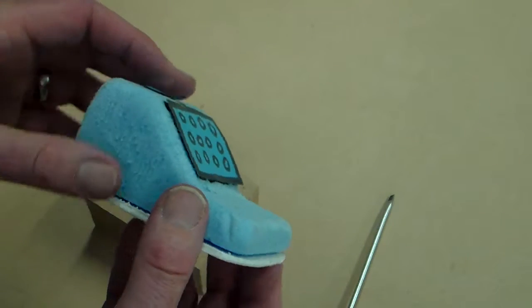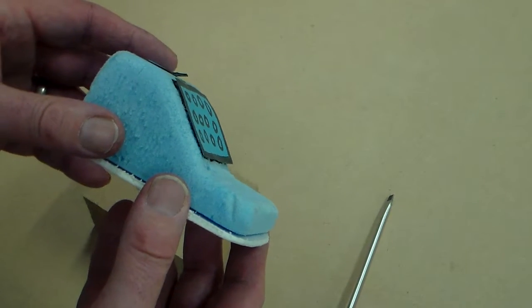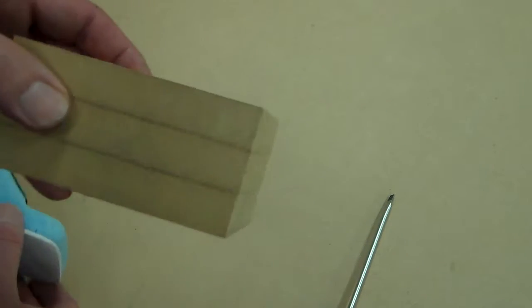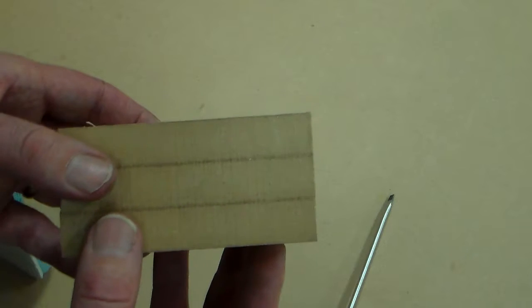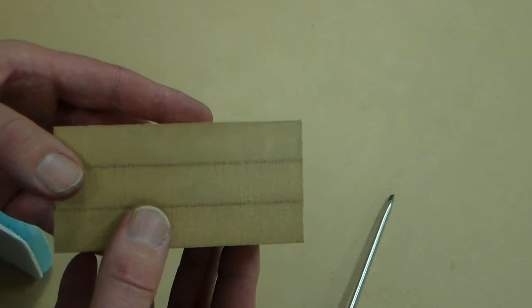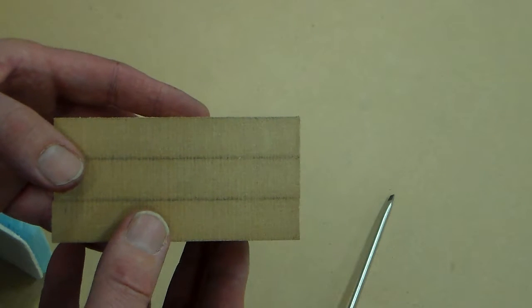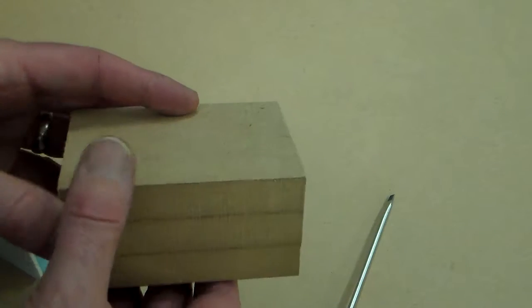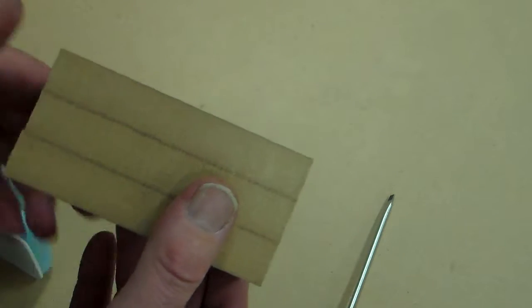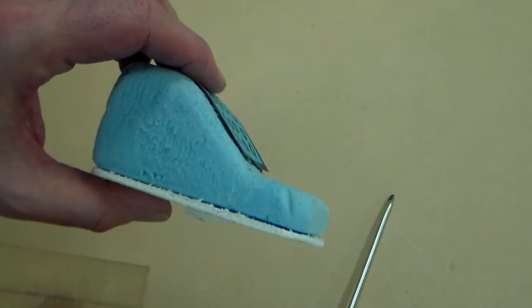And now what we need to do to make a mould that we can vacuum form from, we need to transfer this shape to this block of MDF. Now the MDF is going to make a solid and reusable mould that we can vacuum form from. It's also heat proof. But the problem with it is, although it is quite robust, it's quite difficult to work with, much harder to work with than the foam.